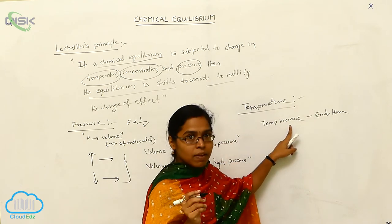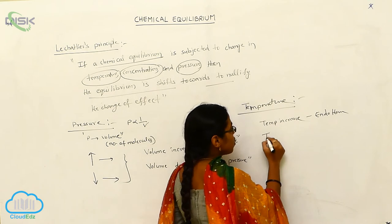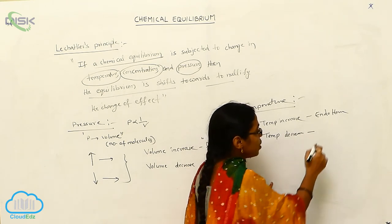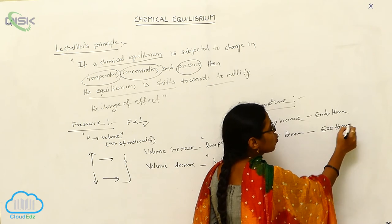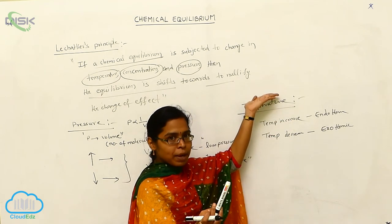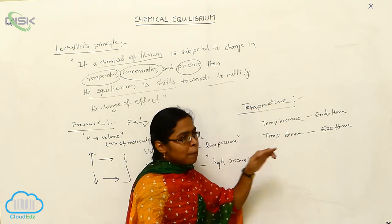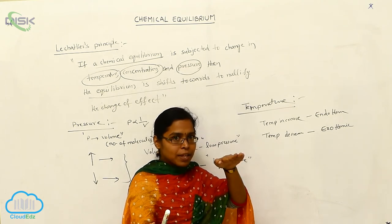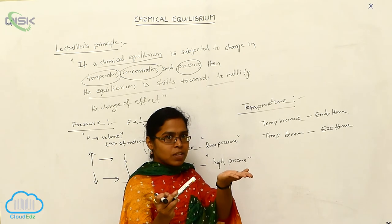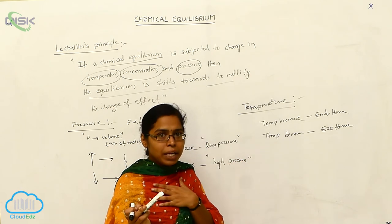Whenever the temperature increases, the chemical equilibrium is shifted towards the endothermic type. If the temperature is decreased, it should be shifted towards the exothermic type. When temperature is increased, the equilibrium absorbs the energy — that reaction is endothermic. If the temperature is already decreased, the equilibrium needs to increase the temperature by evolving heat energy — that is exothermic reactions.